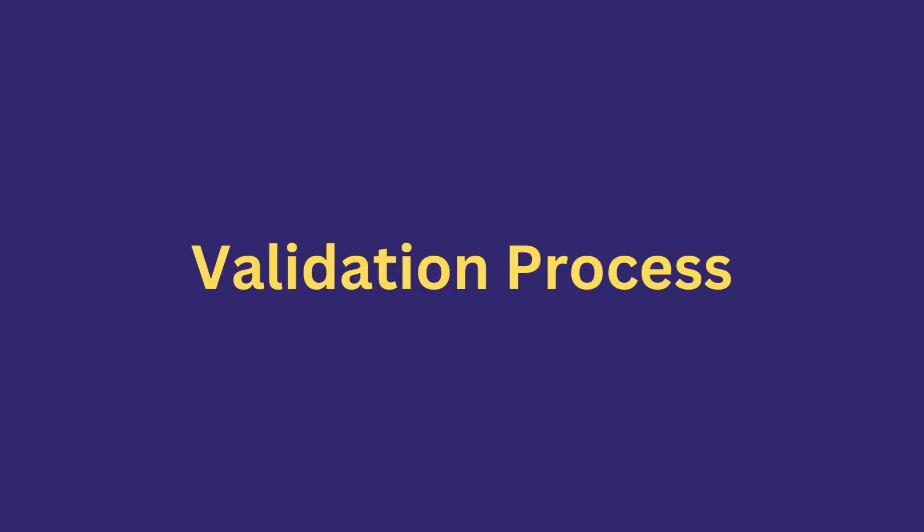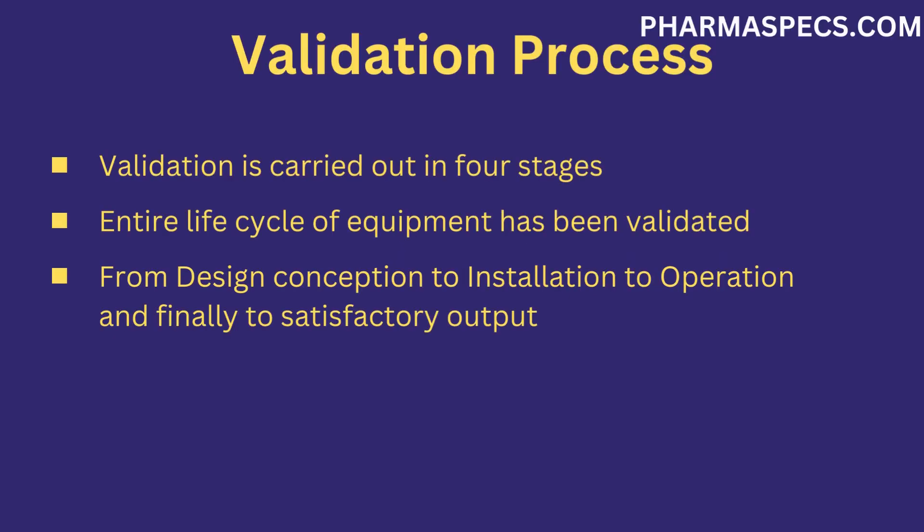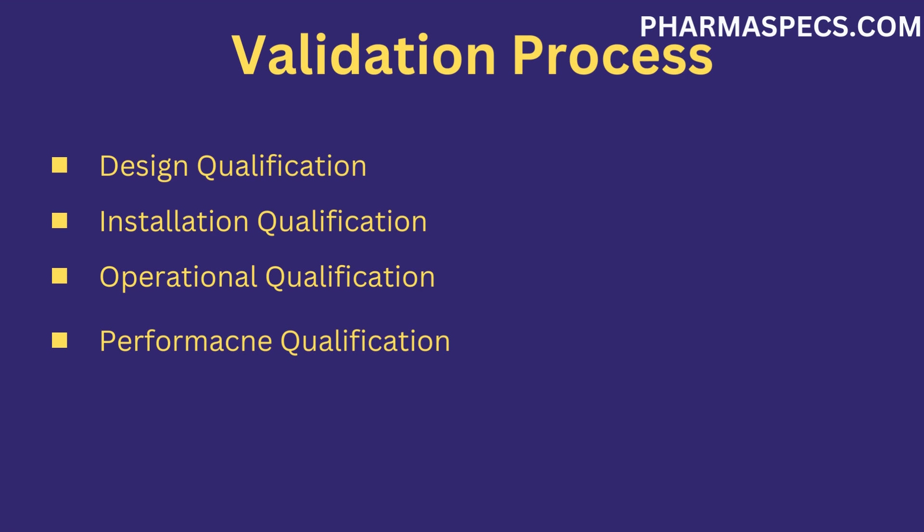There are four stages of validation. The purpose of each stage is to make sure that the entire life cycle of pharma equipment has been validated — from design conception to its installation, to its operation, and finally to its output. The four stages are: design qualification, installation qualification, operational qualification, and performance qualification.